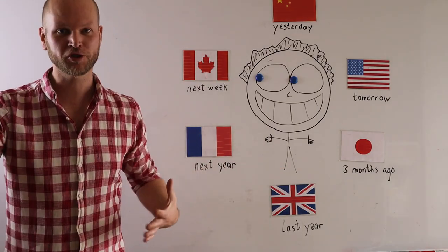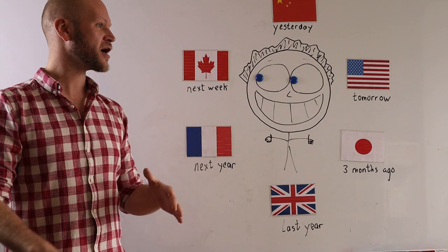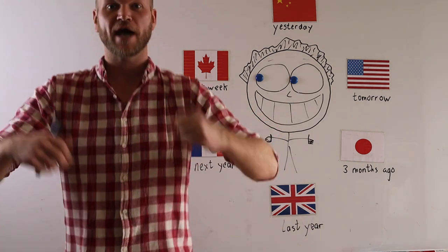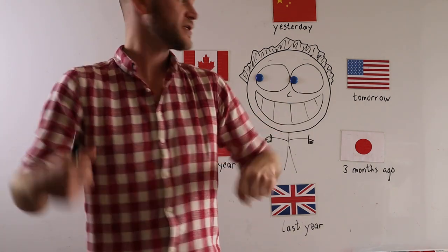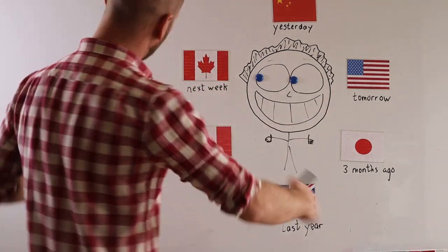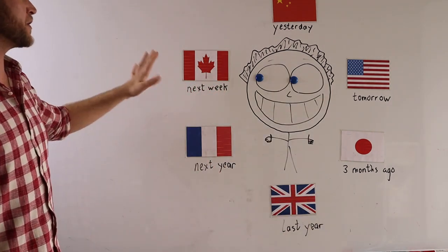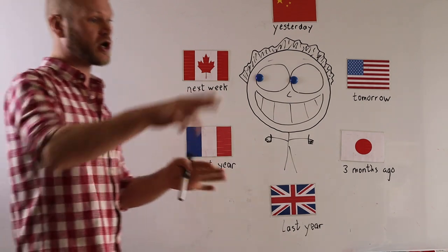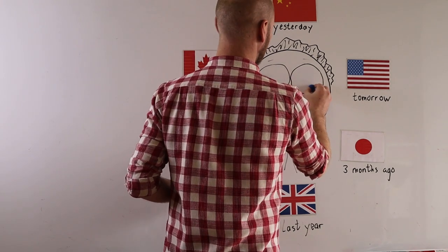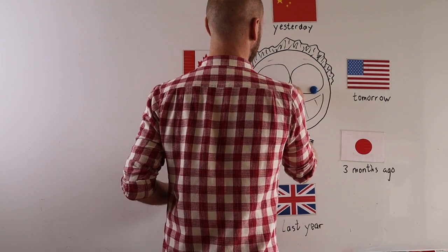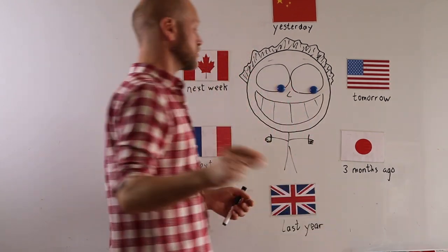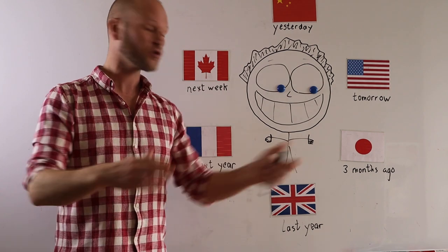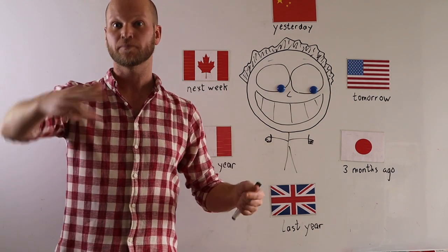If you have older students, you can try something like this — same thing, back to the board. Three, two, one, go! 'I will go to Canada next week.' Wow, good job! Try again, turn around, move the eyes. Three, two, one, go! 'I went to Japan three months ago.' Good job! Try again.